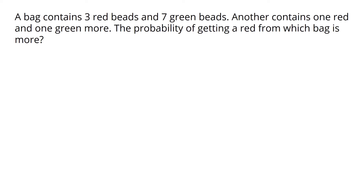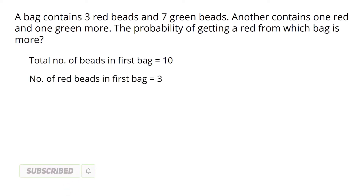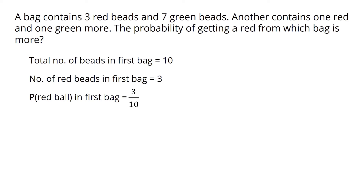The first bag: we are looking at red beads. The first area is equal to total beads — that is, 3 plus 7 is equal to 10. How many red beads? 3. So the probability of the red beads is 3 by 10. This is the simplified fraction — 3 by 10 is already simplified.